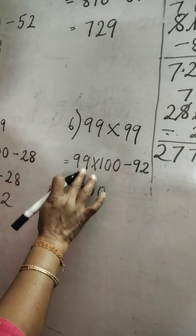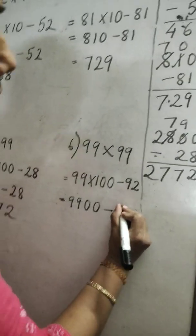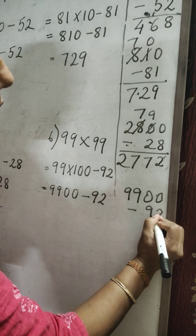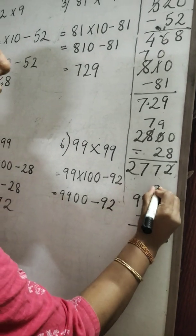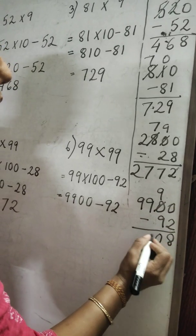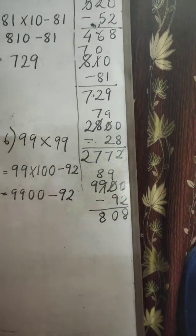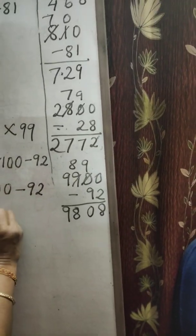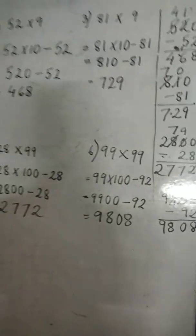Another example: 92 multiplied by 99. Same method — multiply 92 by 100 to get 9900, then subtract 92. 99 ones are 99, put the two zeros. Now subtract 92. Ten minus 2 is 8. What remains here — 9. 9 minus 9 is 0, so you borrow, which leaves 8 here. The answer is 9008.